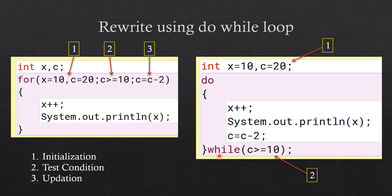The test condition goes under the while: while c greater than or equal to 10, then close parenthesis and semicolon. Since it is a do-while (an exit control loop), the test condition is written at the last. The updation statement c equal to c minus 2 should be the last line inside the body of the loop. This is how you rewrite a for loop into a do-while loop.